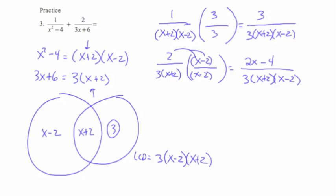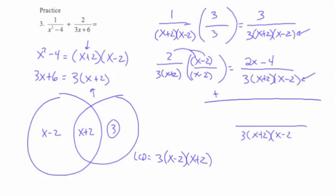I'm running out of space, so I'm going to add them down the page to save space. When we add these rational expressions, they now have common denominators. The denominator stays the same: 3 times (x plus 2) times (x minus 2). In the numerators, I'm going to add 3 and (2x minus 4). The only things I can combine are the constant terms: 3 plus negative 4 is negative 1. So I get 2x minus 1 in the numerator.